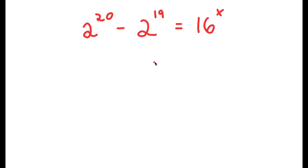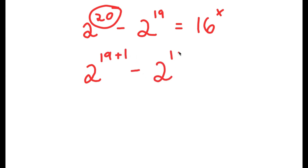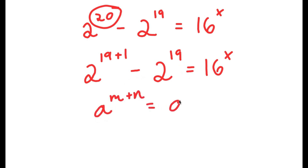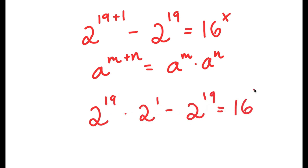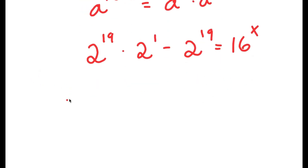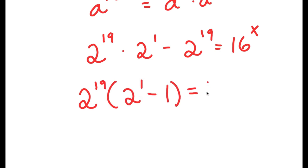In this problem, I have 2 to the power of 20 minus 2 to the power of 19 is equal to 16 to the power of x. I'll rewrite 20 as 19 plus 1, so I have 2^(19+1) minus 2^19 equals 16^x. Using the rule a^(m+n) equals a^m times a^n, this becomes 2^19 times 2^1 minus 2^19 equals 16^x. Factoring out 2^19, I get 2^19 times (2^1 minus 1), which simplifies to 2^19, equals 16^x.